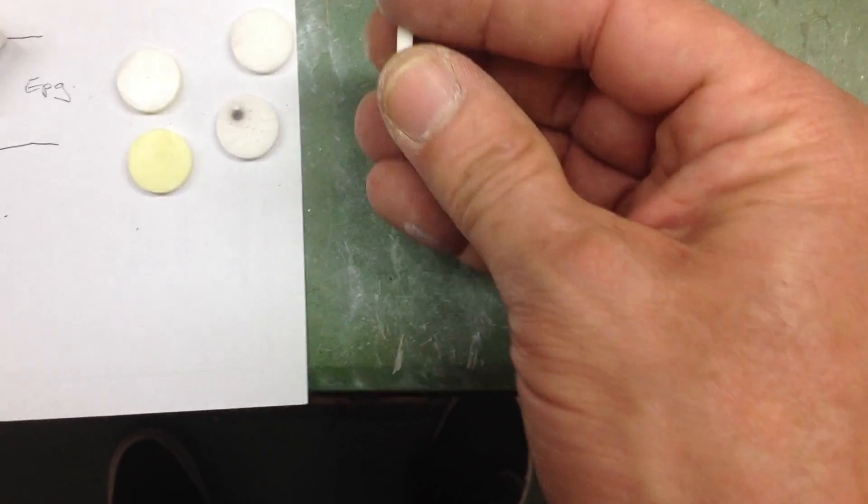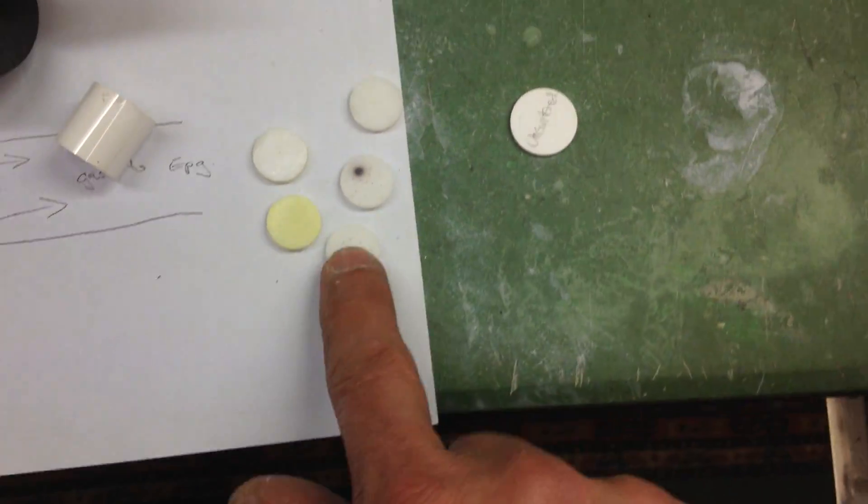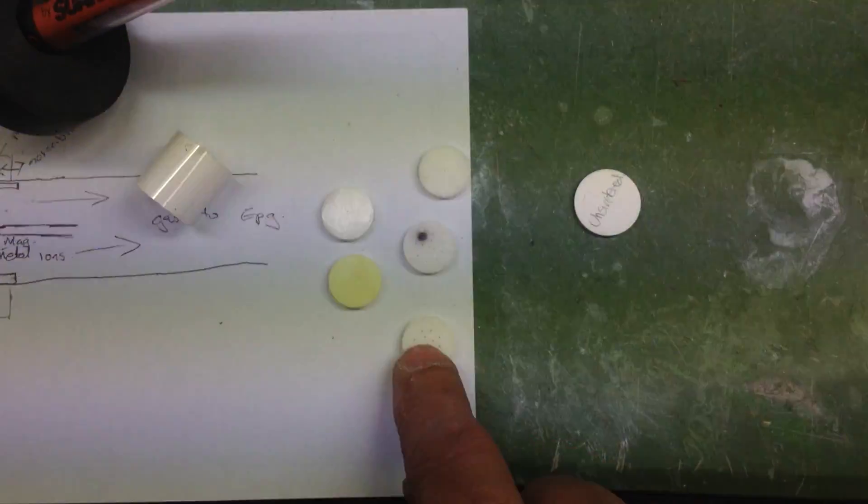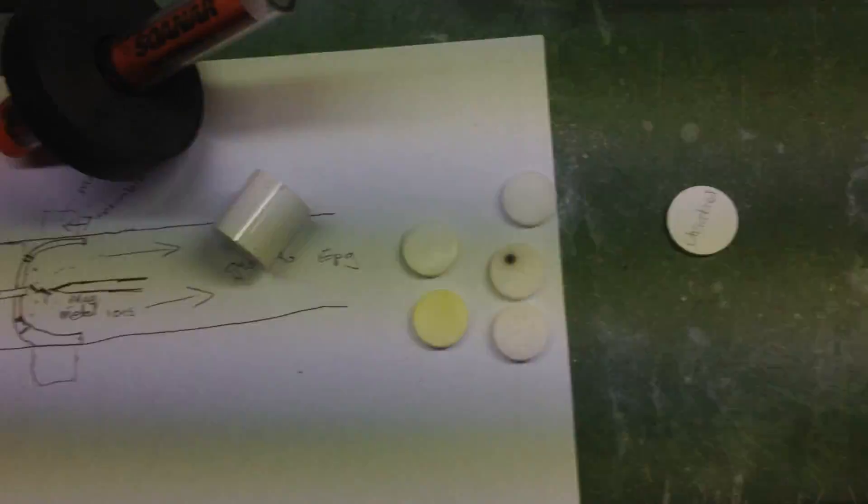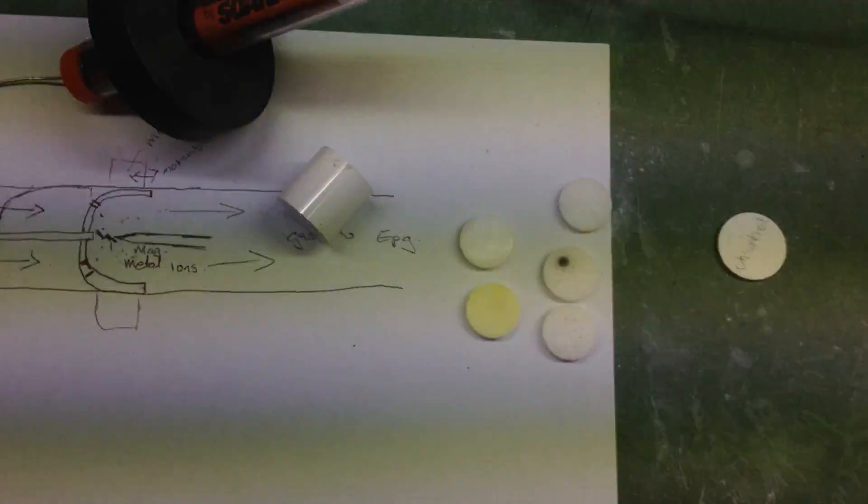But don't forget to seal them, Max. They have to be sealed. You can never ever tighten the ceramic onto a metal fitting without some sort of sealant in between. Anyway, let me know what you think. Thanks for watching. Bye.